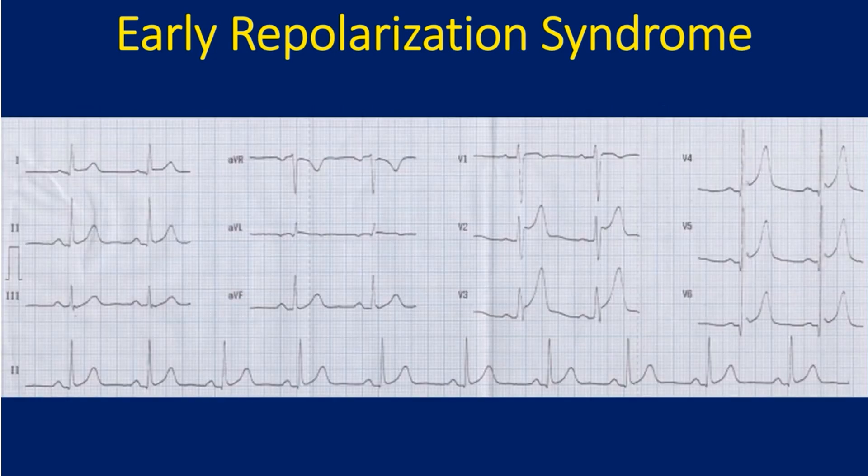Another ECG showing early repolarization syndrome is evidenced by the concave upwards ST segment elevation in leads V2 to V6. A closely similar pattern can occur in the hyperacute phase of myocardial infarction. Moreover, persons with ERPS can also develop myocardial infarction. So if the clinical history is suggestive of ischemic cardiac pain, it is better to have follow-up with serial ECGs and troponin estimations.